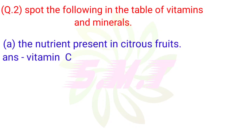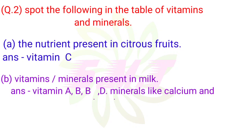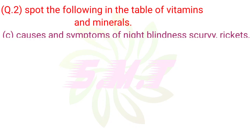Question 2: Sort the following in the Table of Vitamins and Minerals. A. The nutrient present in citrus fruit — Answer: Vitamin C. B. Vitamins or minerals present in milk — Answer: Vitamin A, B, B12, D, and minerals like calcium and phosphorus.